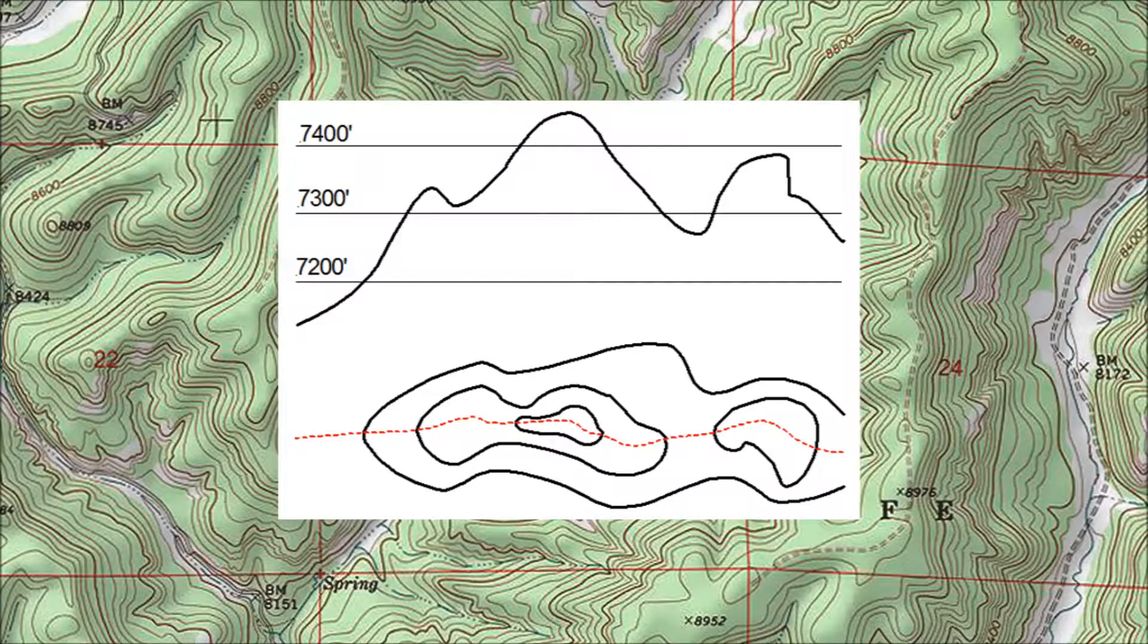One limitation of contour lines is that they don't tell you the elevation for a spot that doesn't fall right on that line. Let's assume that these drawings are of a ridge that you want to traverse during your hike. The top drawing shows the ridge in profile. The bottom drawing shows a contour map of the ridge with a dashed red line to mark your route. It might be handy to know the exact elevations of the three peaks shown in the profile.